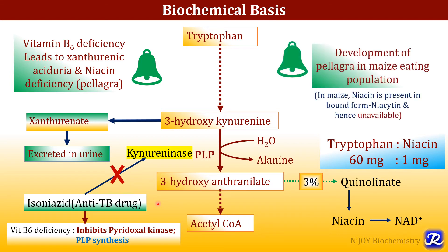Next, why is pellagra more common in maize-eating populations? Because maize lacks the amino acid tryptophan. So people who eat maize have tryptophan deficiency, and that's why there will be niacin deficiency — because half of the body's requirement of niacin depends on tryptophan. Therefore, in maize-eating populations, tryptophan deficiency leads to niacin deficiency and this niacin deficiency leads to pellagra.